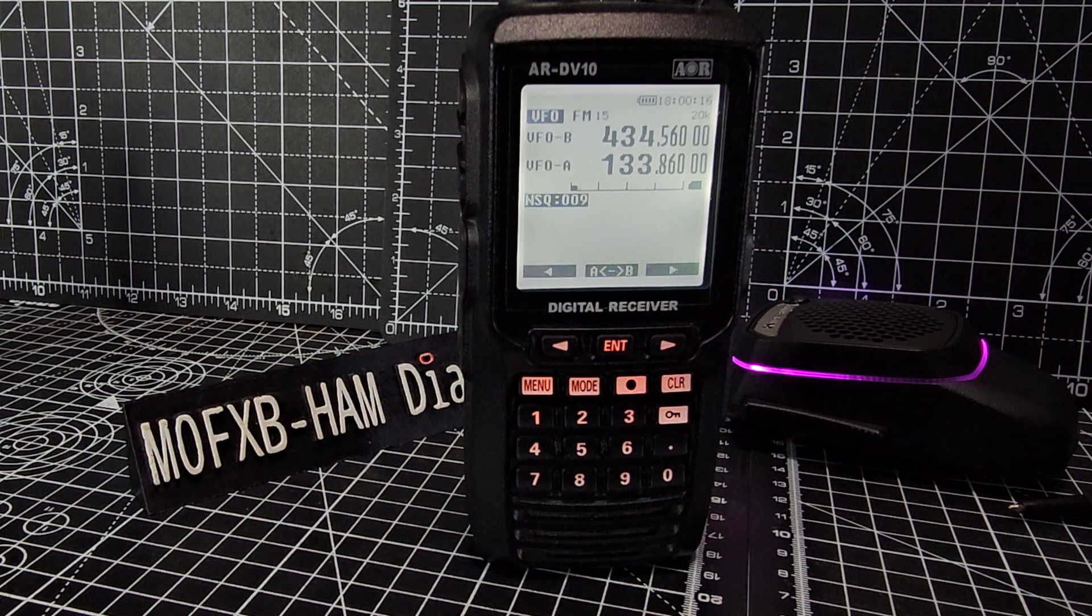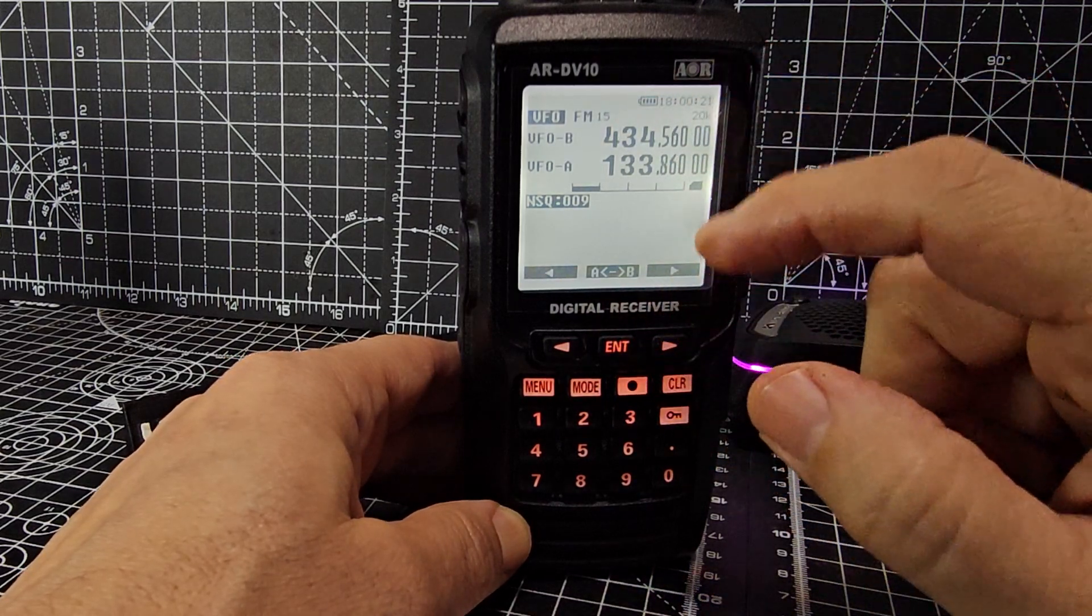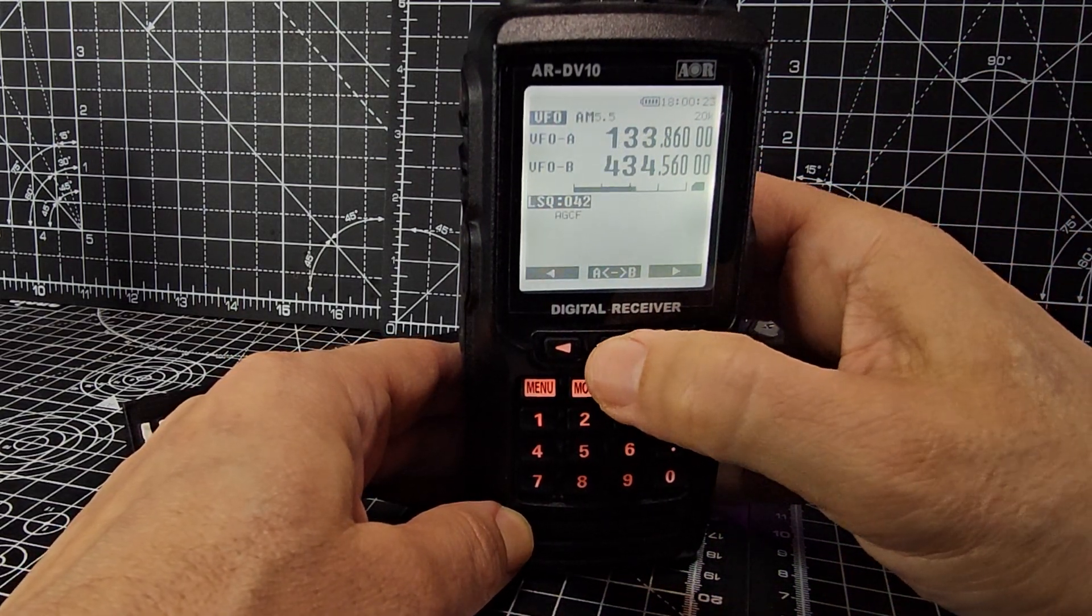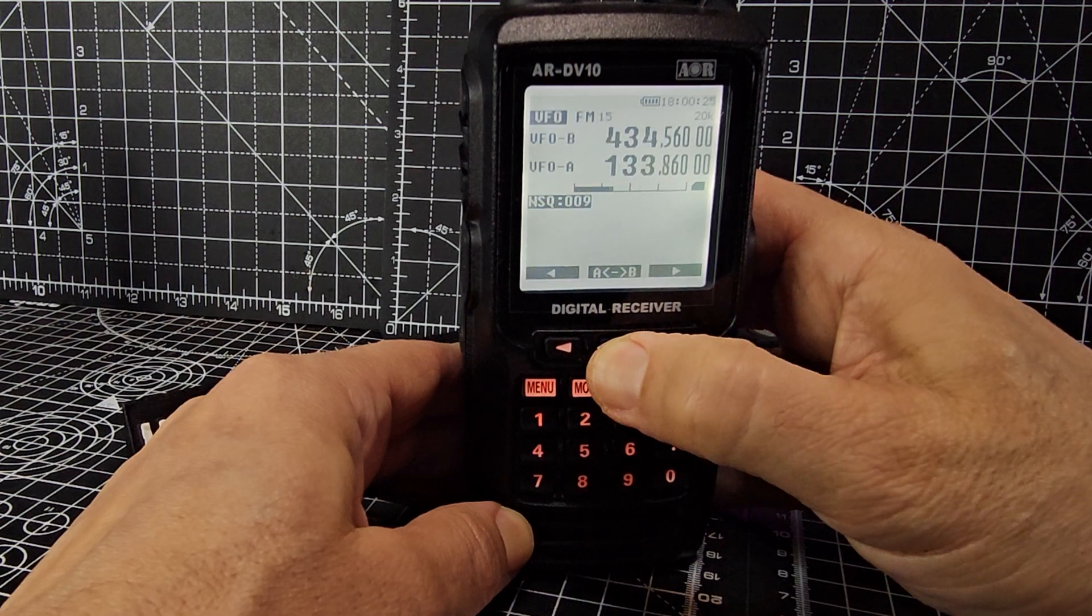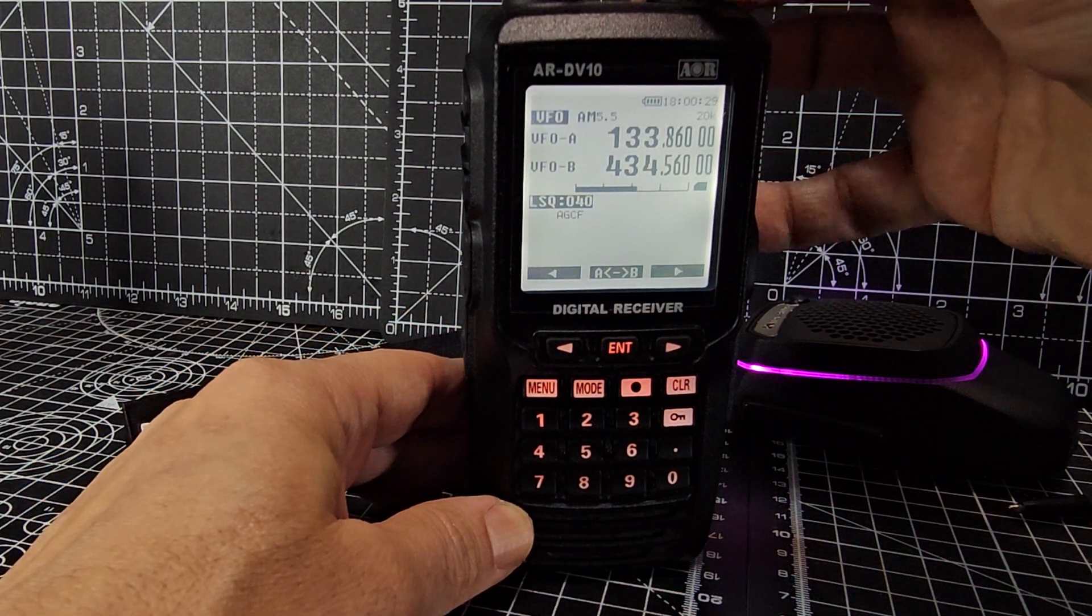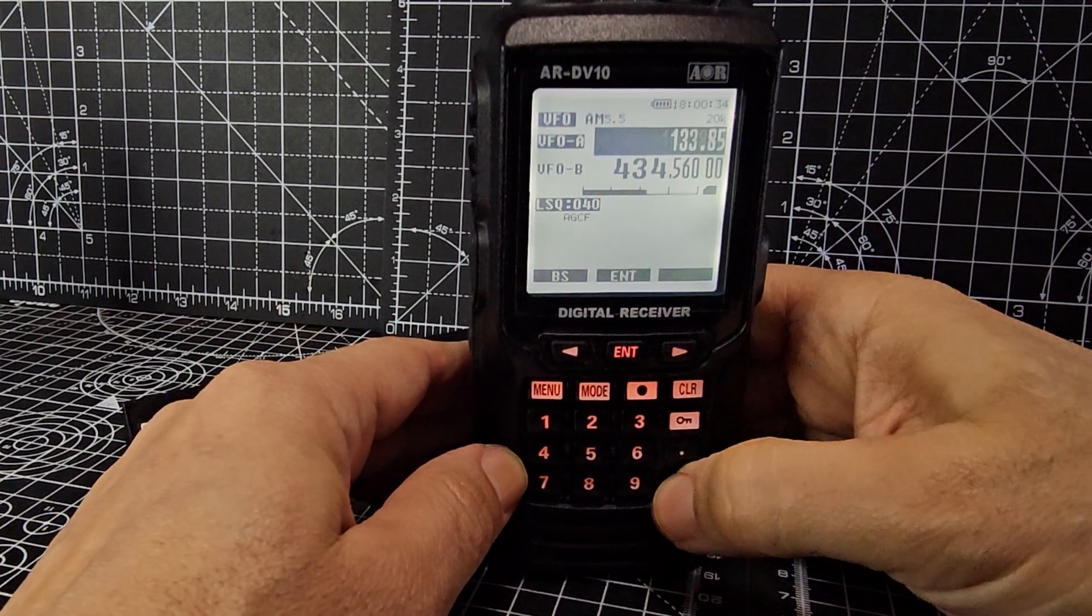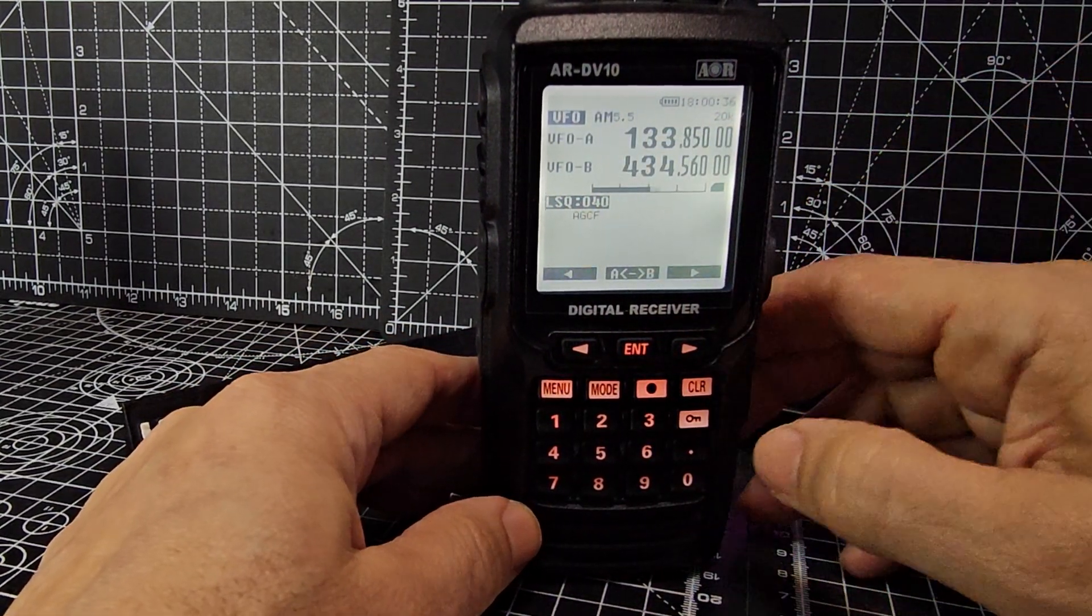So go back to where we were. VFO, enter. Look at that, I did it by accident. It takes you A and B. Look, A, B, A, B. We're doing the A band which is AM, and we set it to 850, didn't we? So 133.850, enter, AM.